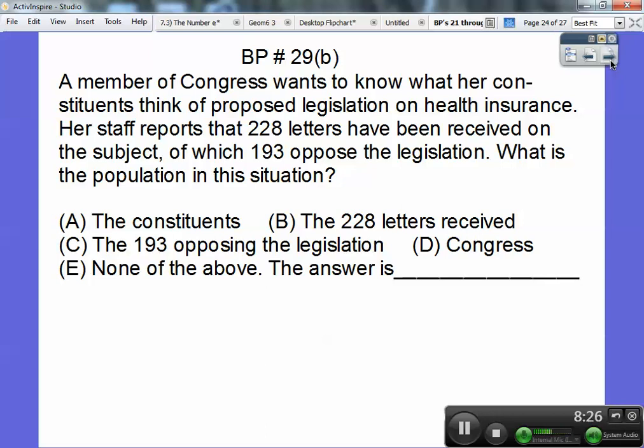A member of Congress wants to know what her constituents think of proposed legislation on health insurance. Her staff reports that 228 letters have been received, of which 193 oppose the legislation. What is the population of this study? The population is the entire group of individuals you want information about. We want information about her constituents. The whole population would be choice A.